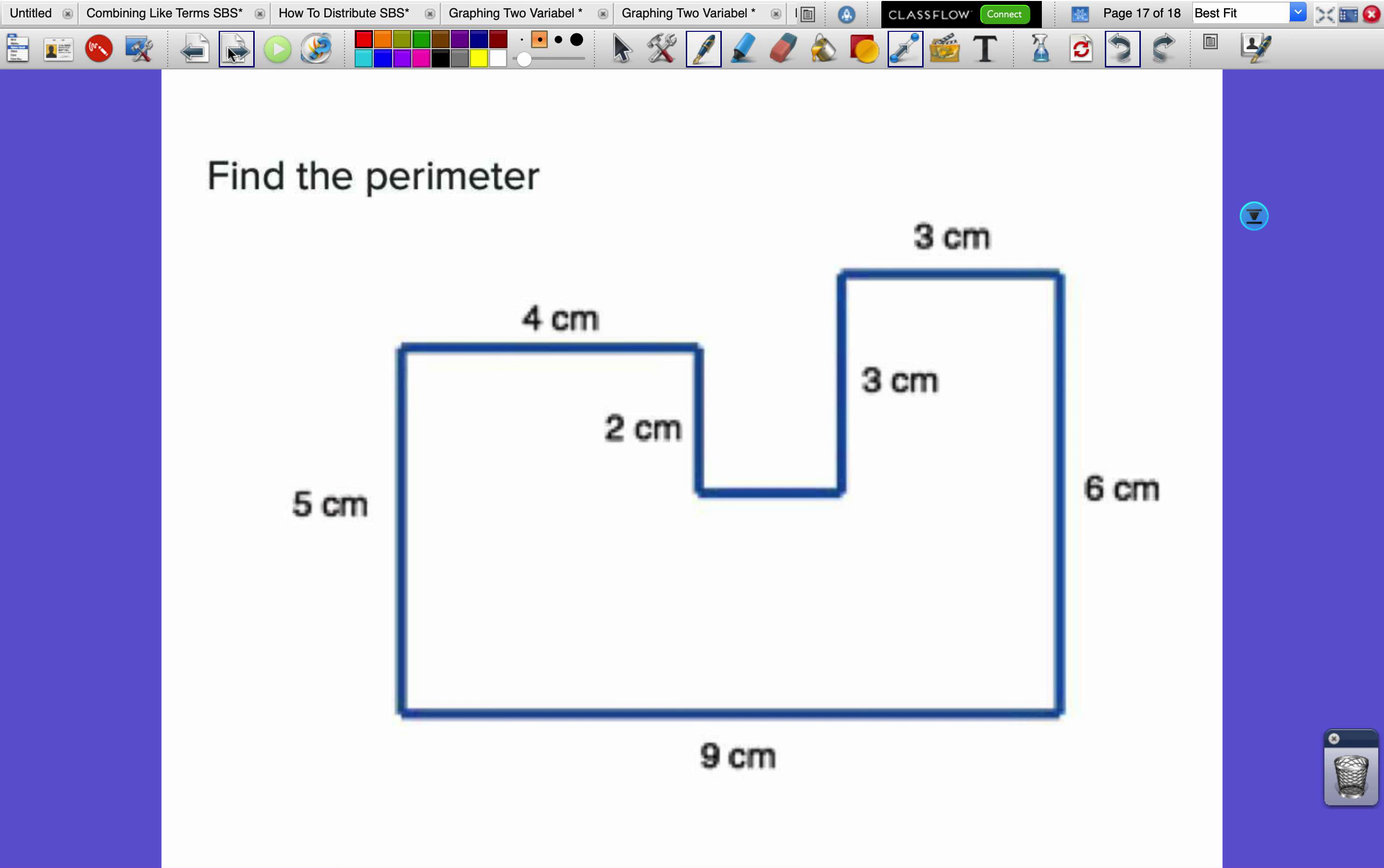Now we have one more really tough one. This isn't even an L-shape. It's just a mix of a bunch of rectangles smushed together into this composite shape. Can we find the perimeter?